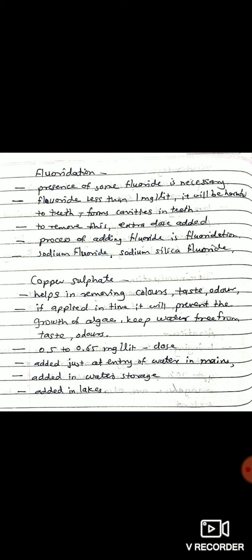It can be added in lakes or impounded reservoirs for the prevention of algae growth. But if its excessive dose is added, it will kill the fish and other water livings. Therefore, the quantity of dose should be properly determined. We should just check the growth of algae and not kill the fish or any other aquatic life.